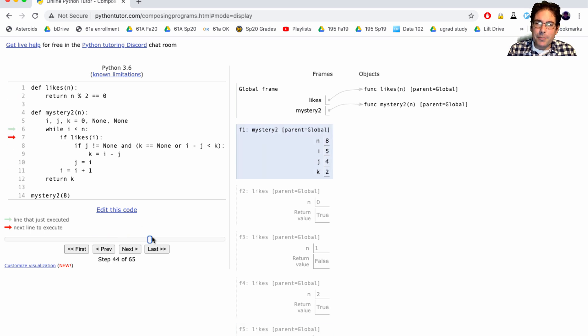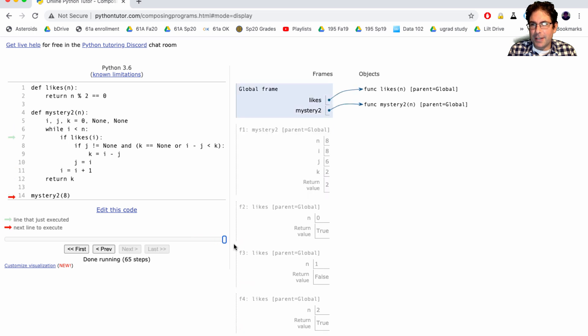So we could trace through the rest of the code step by step, but I think we already know where this is headed. It should be the case that mystery two eight is the smallest difference between any two numbers that George likes. And if George likes even numbers, then that smallest difference should be two. And that's what we got. If we wanted to be really sure, I think we could try with different likes functions and see what happens. But I think we know enough to try to answer the question now.